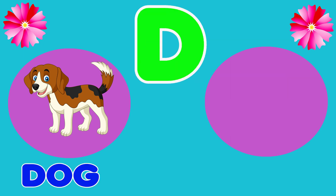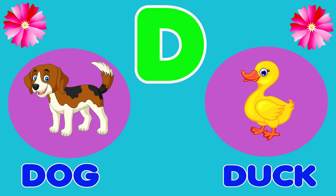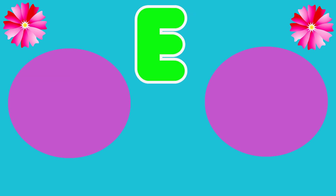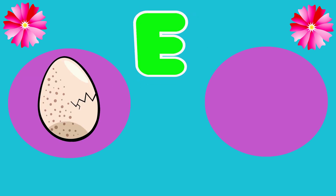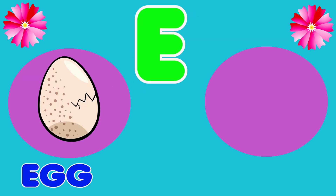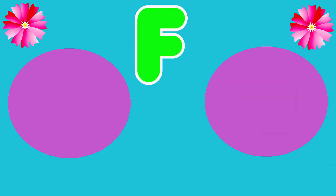D is for Duck. D, D, Duck. E is for Egg. E, E, Egg. E is for Elephant. E, E, Elephant.